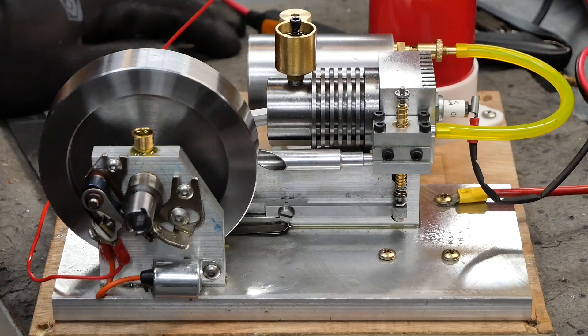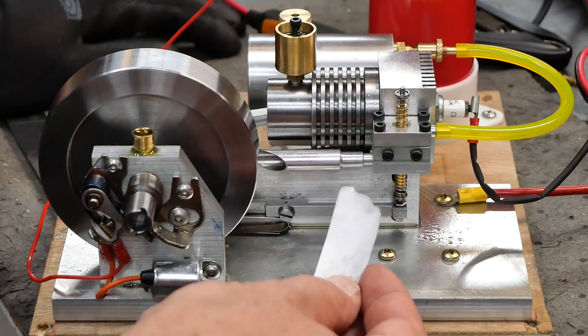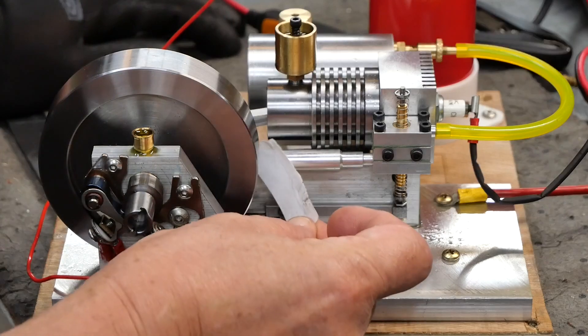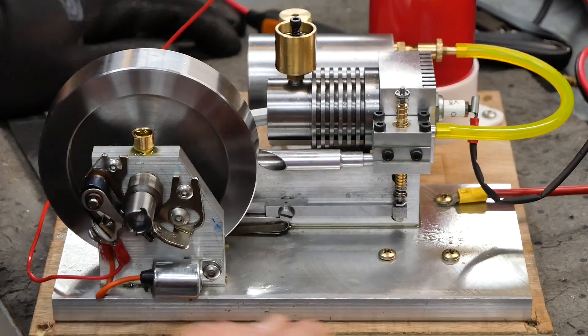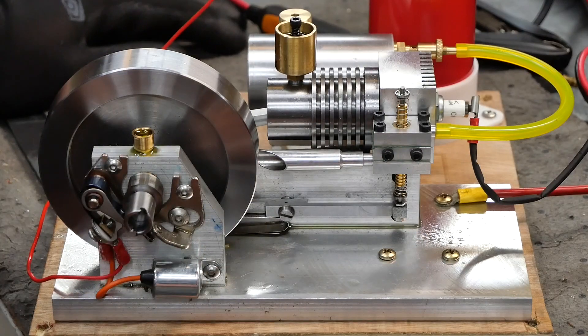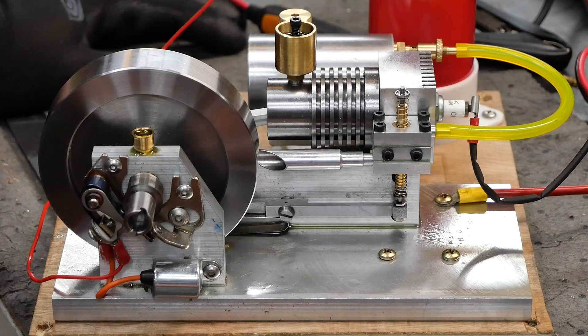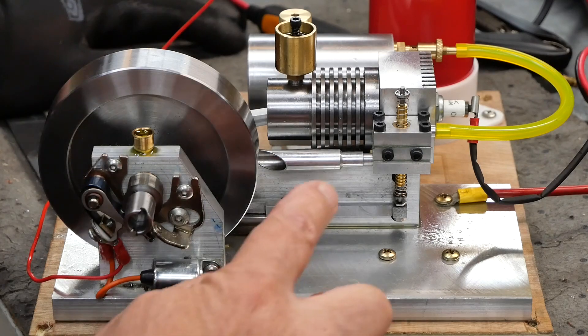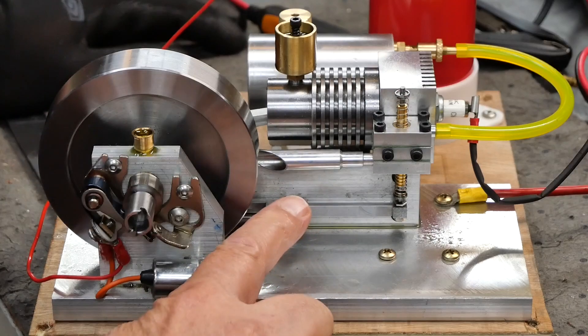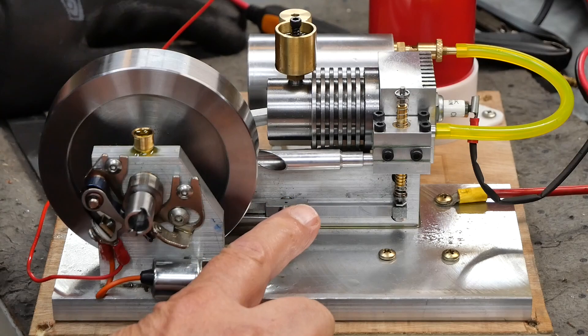So as you can see in here, putting some sort of restriction across the exhaust output caused the engine to apparently run significantly faster. Now why is that? Something to do with back pressure I suppose. I don't understand what that's all about.